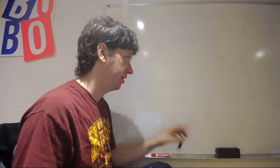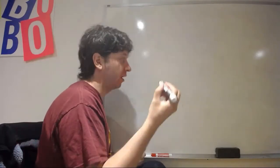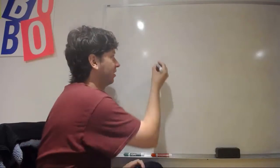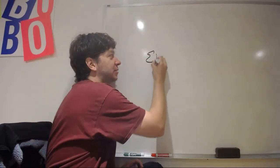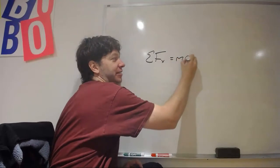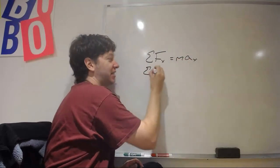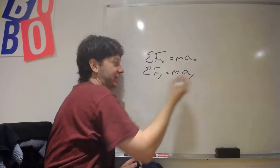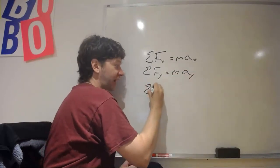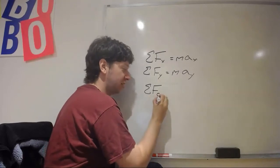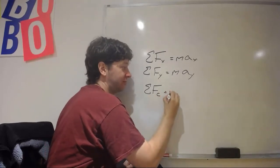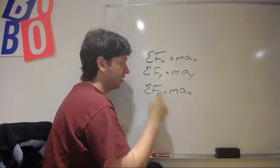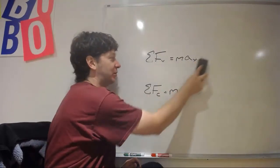So yesterday we looked at centripetal acceleration, but we can apply centripetal acceleration to Newton's second law. Just like we would say the sum of all forces in x equals mass times acceleration in x, and likewise the same thing for y, using this coordinate system, we can also say all the forces which contribute to centripetal force equals mass times centripetal acceleration. So looking at this third one is what we're going to do today.